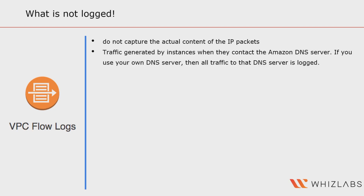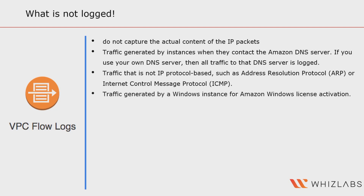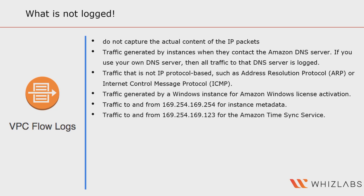The specific traffic types not logged include: traffic generated by instances when they contact the Amazon DNS server — though if you use your own DNS server, all traffic to that DNS server is logged. Traffic that is not IP protocol-based, such as Address Resolution Protocol (ARP) or Internet Control Message Protocol (ICMP). Traffic generated by a Windows instance for Amazon Windows license activation. Traffic to and from 169.254.169.254 for instance metadata, and traffic to and from 169.254.169.123 for the Amazon Time Sync Service.